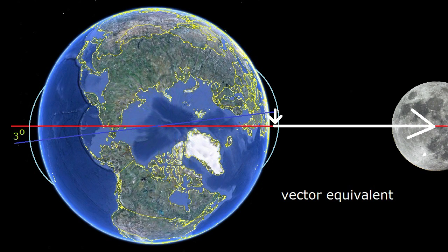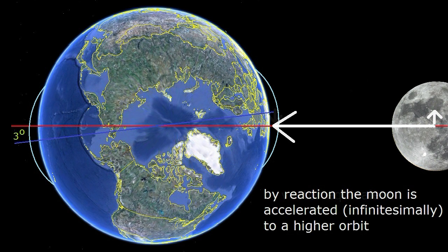Which in turn slows the earth's rotation and increases the moon's velocity by reaction, which causes the moon to move to a higher orbit at a present rate of 3.8 centimeters per year. Not much, but measurable when verified by laser ranging.